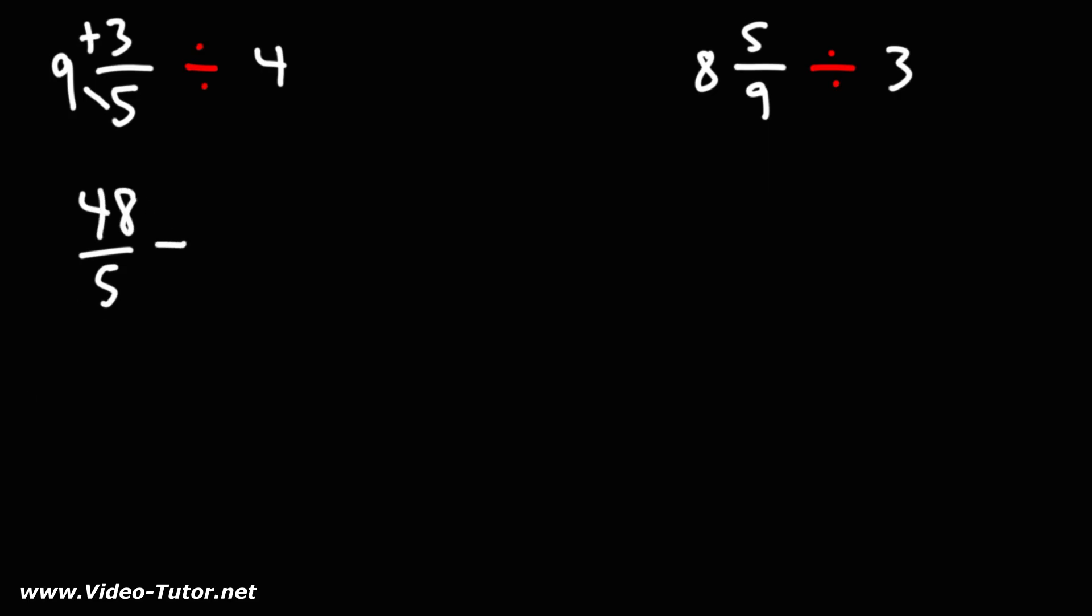Now 4, I'm going to write that as a fraction, 4 over 1. Using keep-change-flip, we can change this division problem to a multiplication problem. So we're going to keep the first fraction the same, change division to multiplication, and then flip the second fraction.